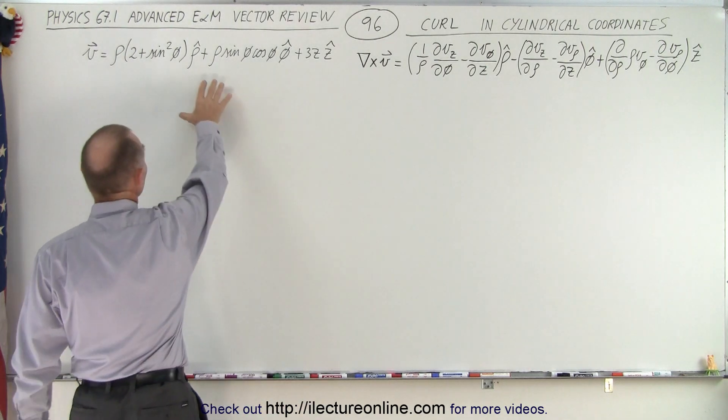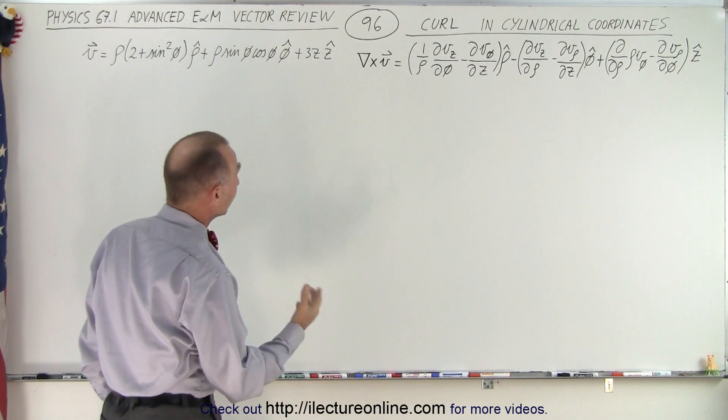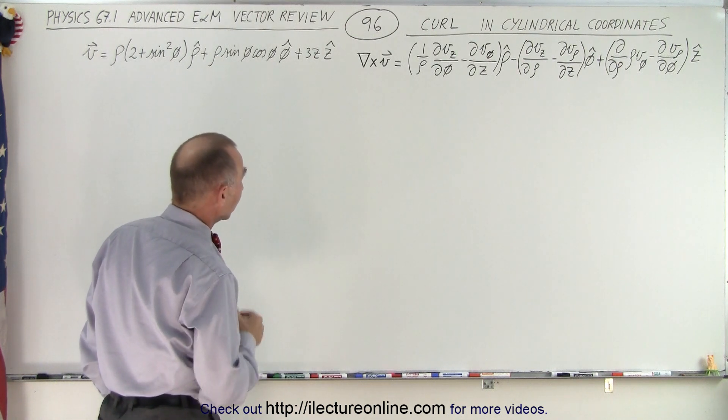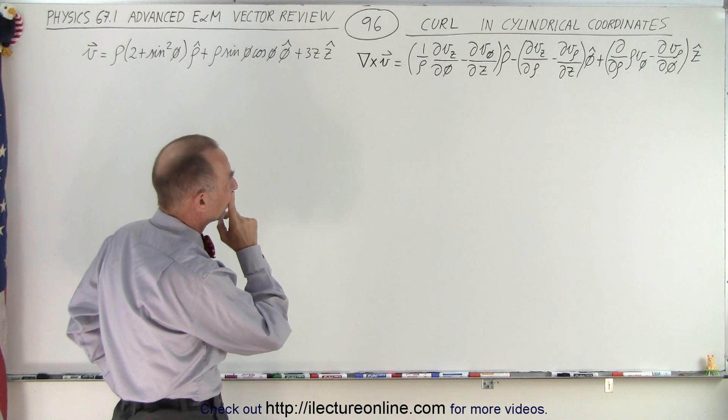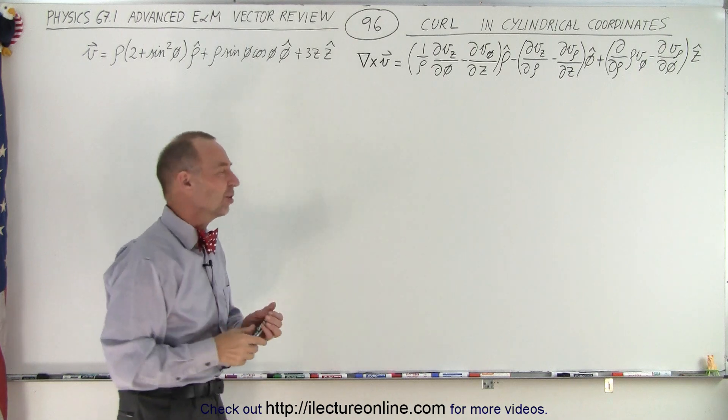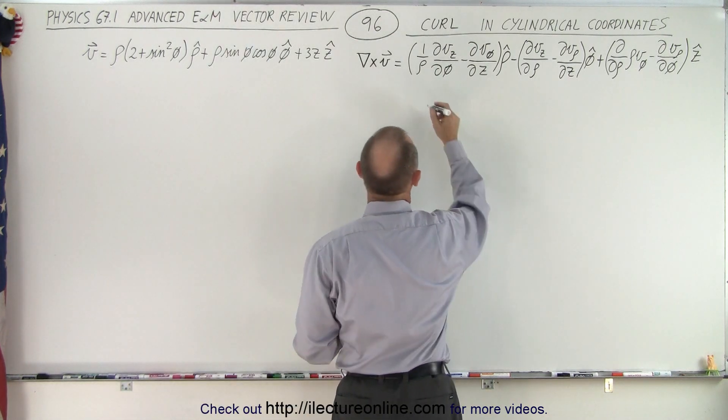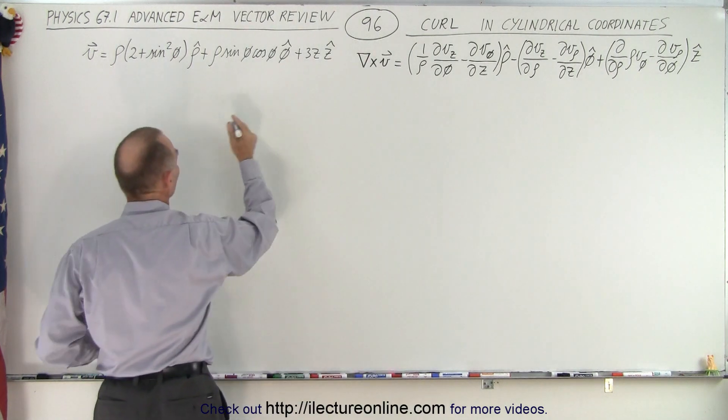So here we use the same vector function that we used in the previous video where we took the divergence of that particular vector function. So now let's go ahead and take the curl. Do we need to do in three sections again? Well, maybe so, let's do it in three sections. Or I don't think we need to in this case. So let's go ahead and kind of expand out and see what we get.